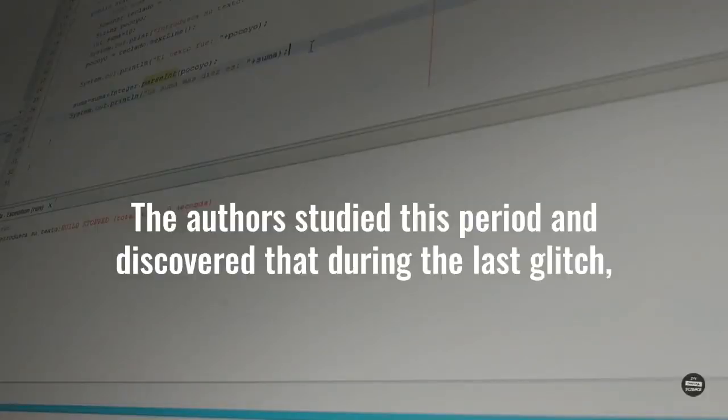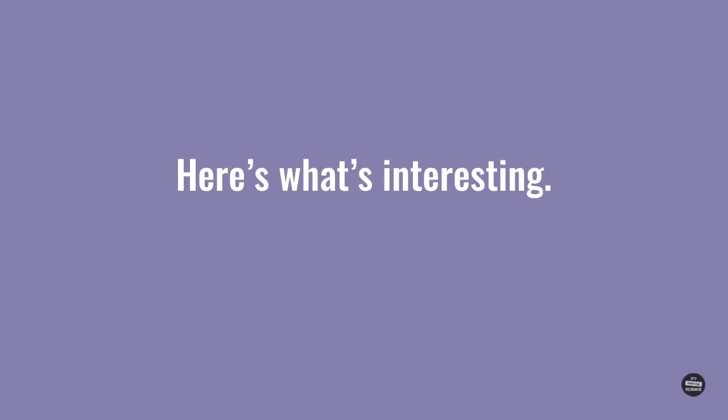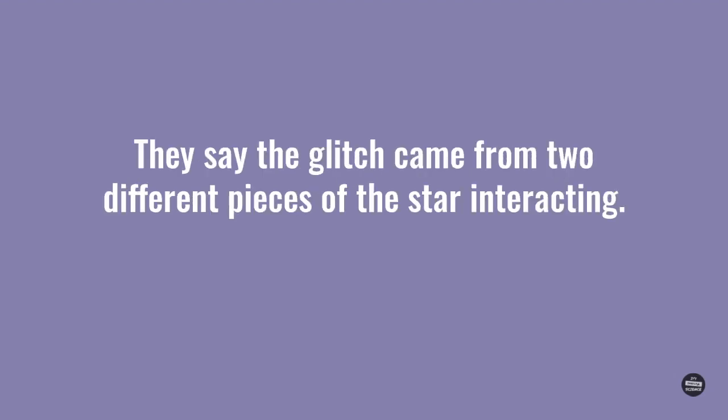The authors studied this period and discovered that during the last glitch, the star spun faster than normal. Here's what's interesting. They say the glitch came from two different pieces of the star interacting.